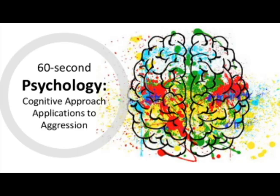Despite these supporting studies, priming studies are very difficult to replicate and most research shows a correlation. However, correlation doesn't prove causation. The cognitive approach also explains aggression through cognitive biases, particularly through hostile attribution bias. This is when a person misinterprets someone's neutral behavior as aggressive, which may cause the person to react aggressively as if they are defending themselves.